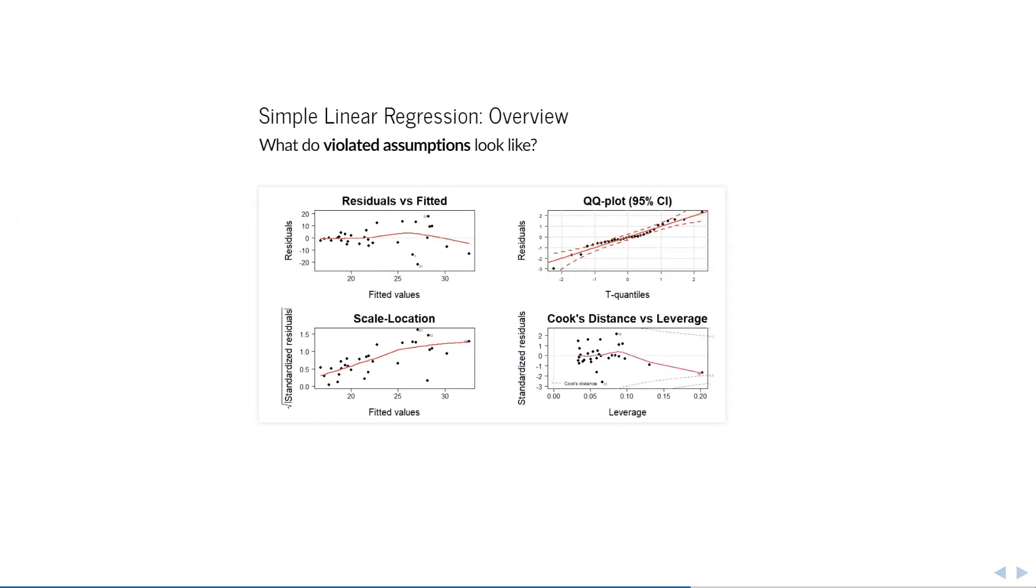Here is another example. What is the problem in this case? You can pause the video and I'll reveal the answer shortly. This is a clear example of non-constant variance. The residuals versus fitted plot shows a clear cone shape. As the fitted values increase, so does the extent to which the residuals differ from the regression line. The same is visible in the scale location plot. There is a very clear upwards trend.